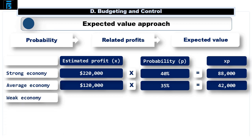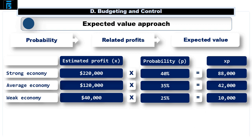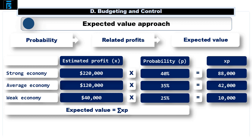Also, given a weak economy, the estimated profit of 40,000, x, has a 25% chance, p, of arising, meaning x multiplied by p equals 10,000. The expected value is the sum of x multiplied by p, meaning we add 88,000, 42,000, and 10,000, to generate an expected value of 140,000.